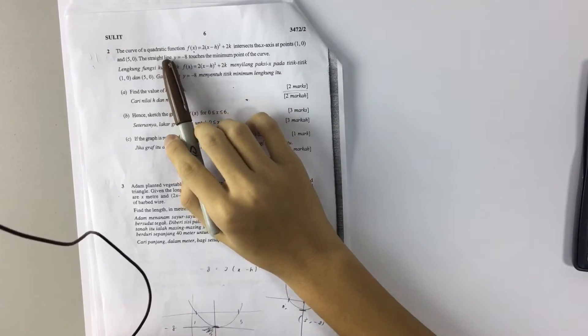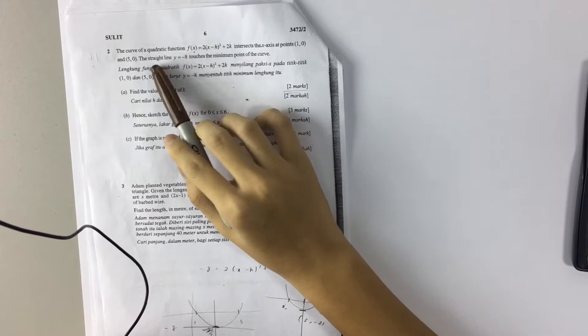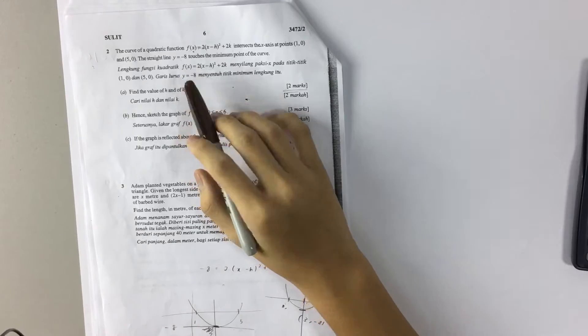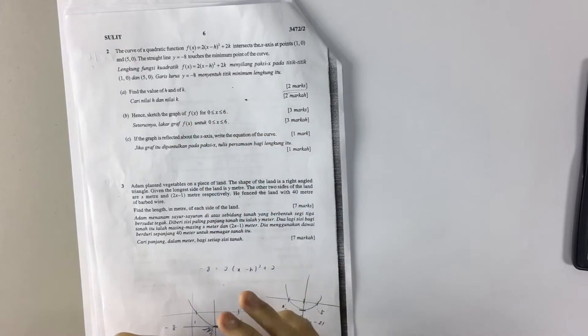The question says the quadratic function fx intersects the x-axis and the minimum point is negative 8. Part A asks you to find the value of h and k.